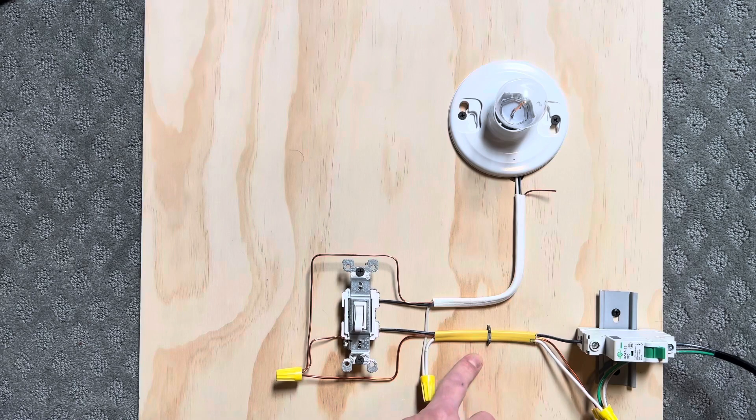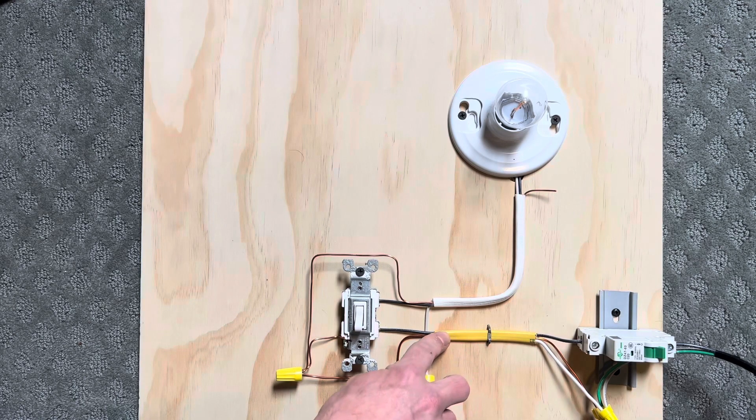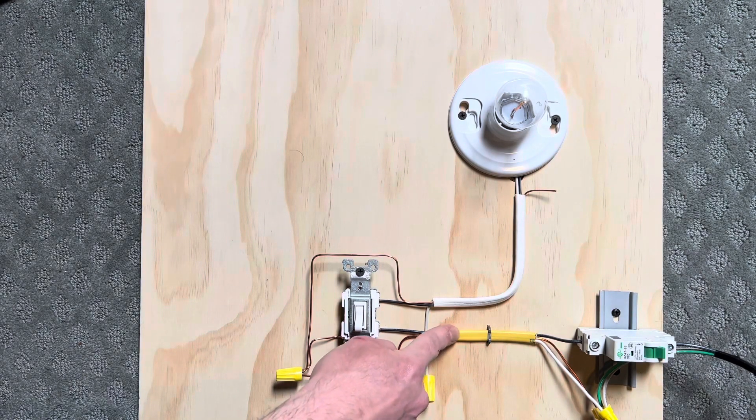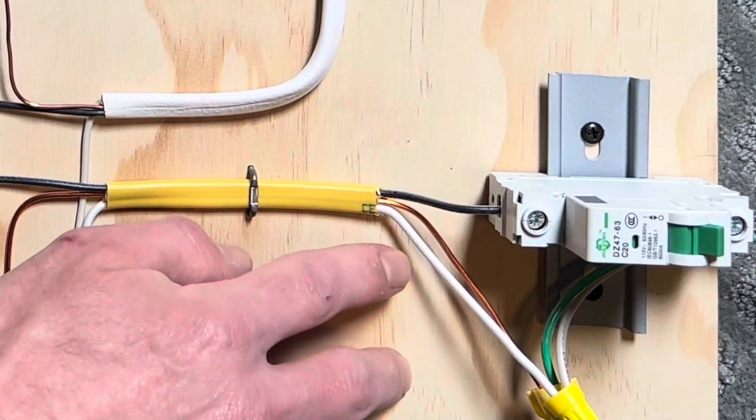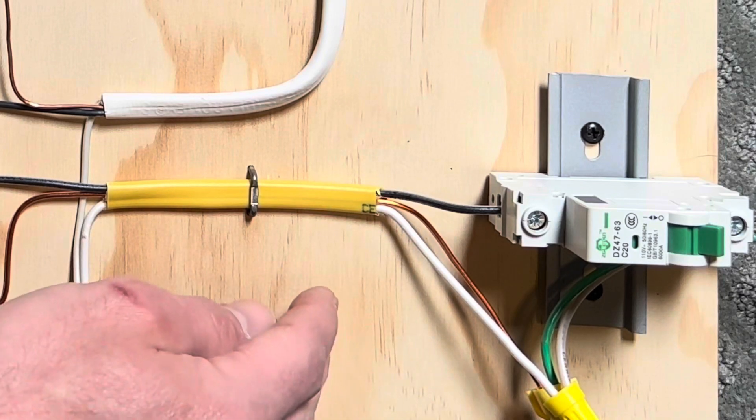Yellow means that there is a number 12 size wire inside of this Romex. This happens to be a 12-2. So you have a black, which is one, and then your white, which is two - 12-2. And then they always have a copper ground inside of that run.